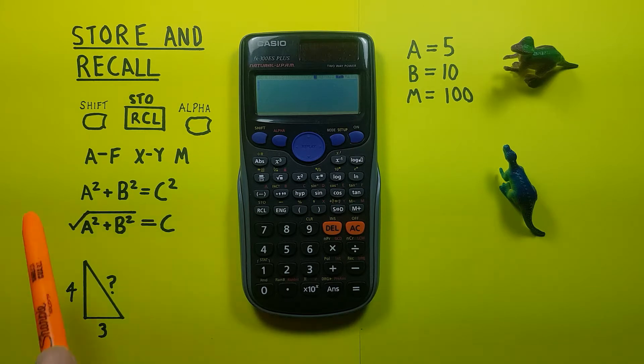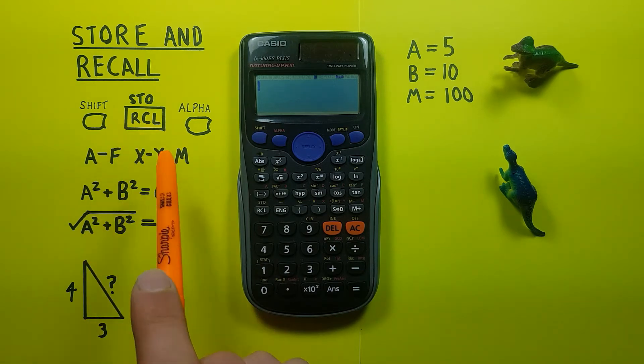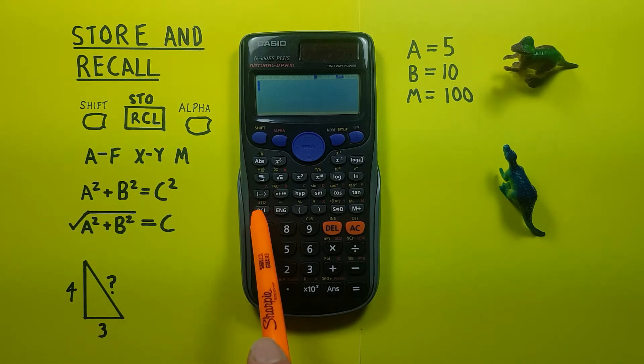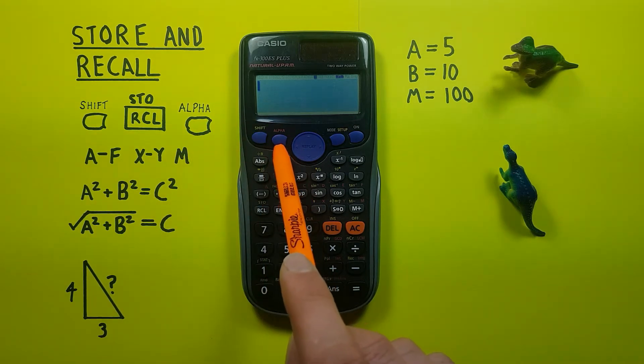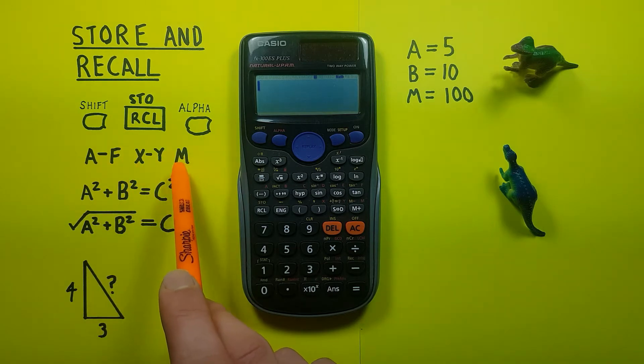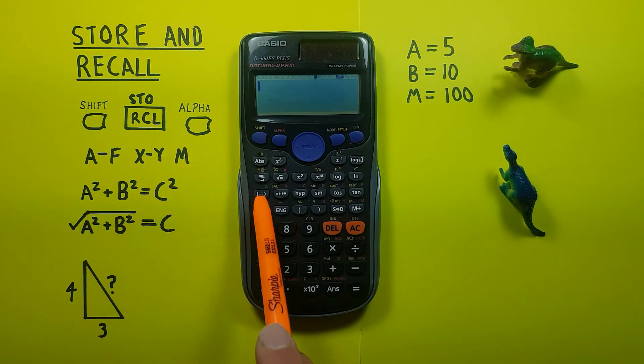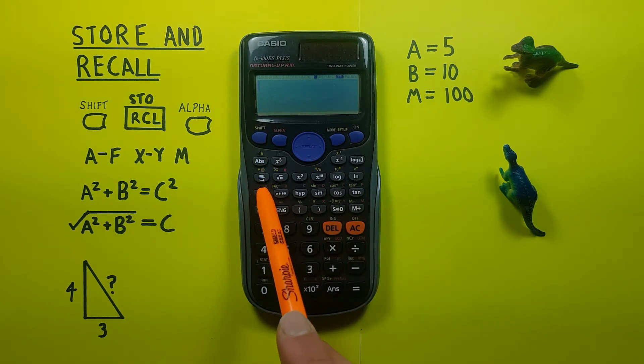To do this we'll be using the shift key, looks like this, located here; the store and recall key that looks like this, located here; the alpha key, looks like this, located here beside the shift key; as well as the A through F, X, Y, M alpha keys which are located along here and you can see the letter in red to the top right of the key there.